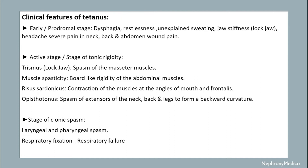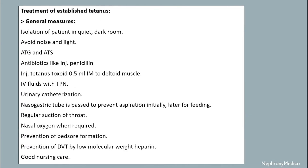Stage of tonic rigidity includes: trismus — spasm of the masseter muscles; muscle spasticity showing board-like rigidity of the abdominal muscles; risus sardonicus — contraction of muscles at the angles of the mouth; and opisthotonus — spasm with extension of the neck, back, and legs forming a backward curvature. Stage of clonic spasm includes laryngeal and pharyngeal spasm and respiratory fixation leading to respiratory failure.